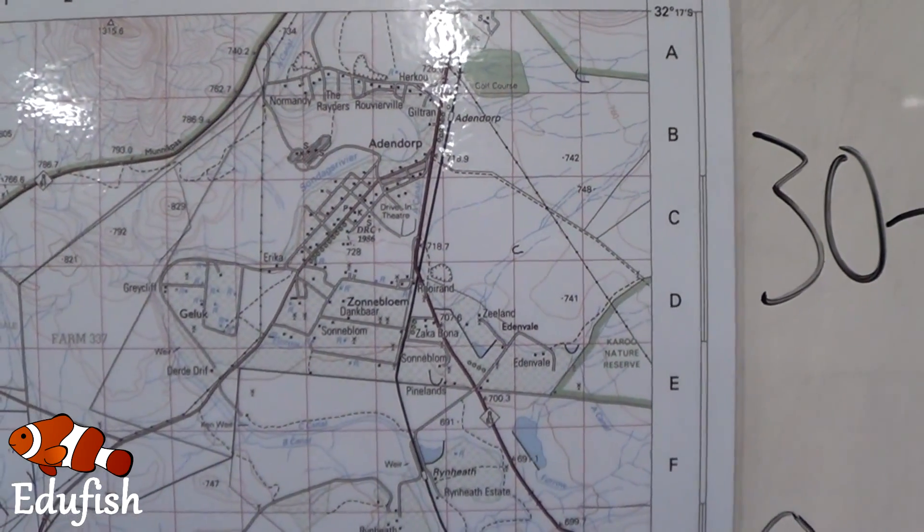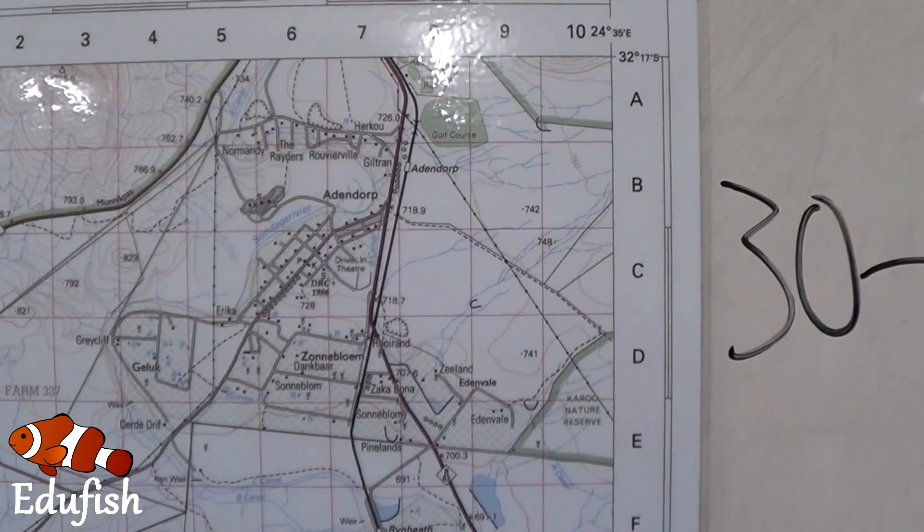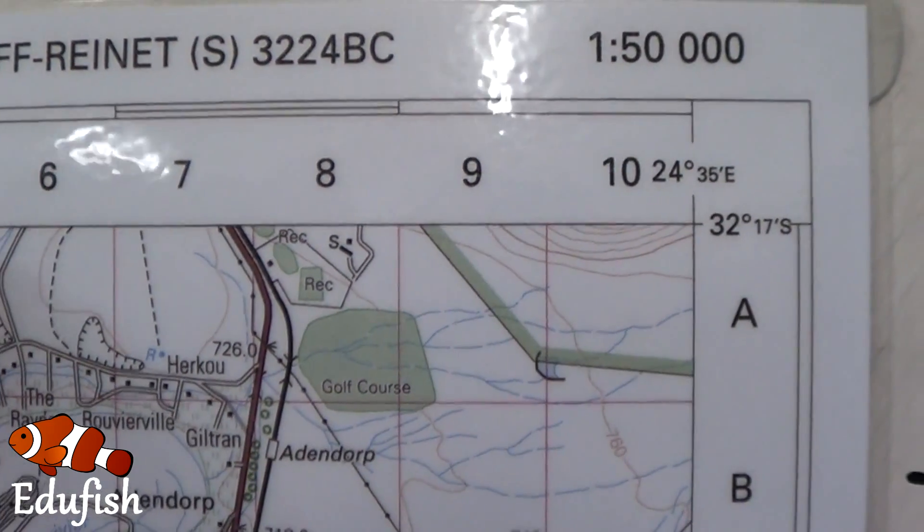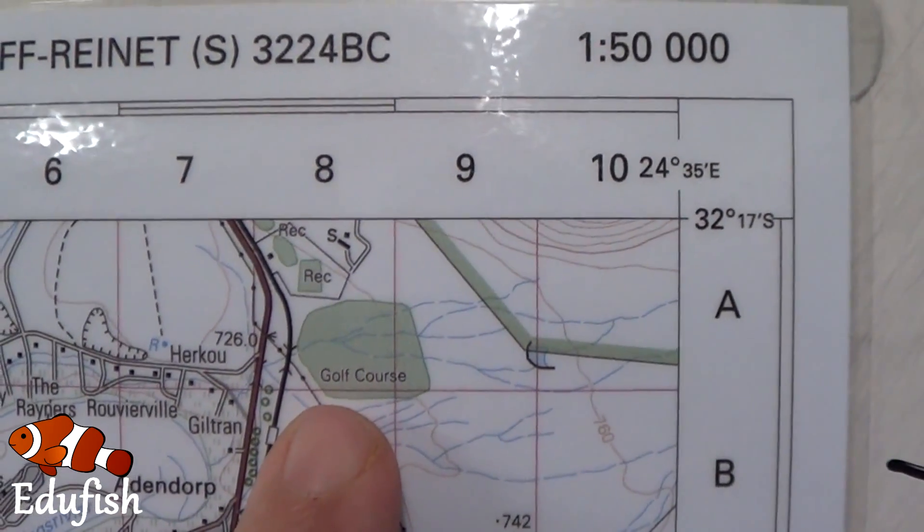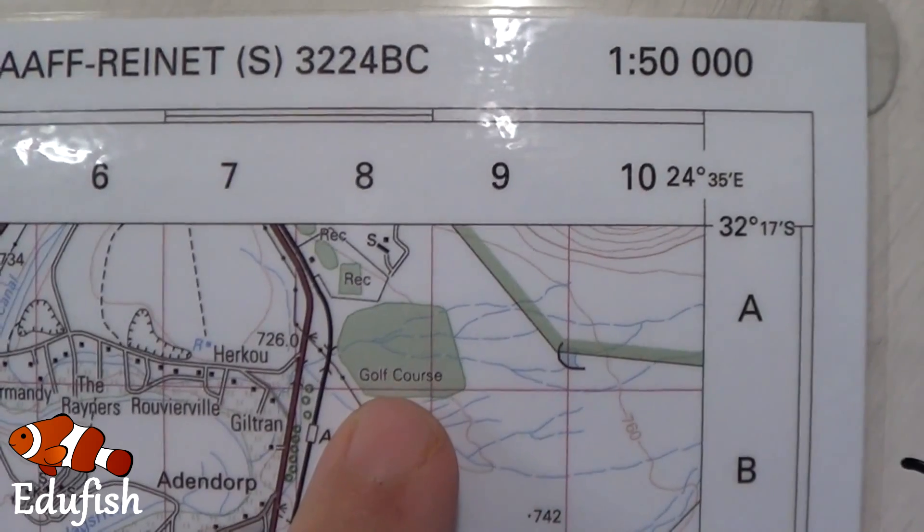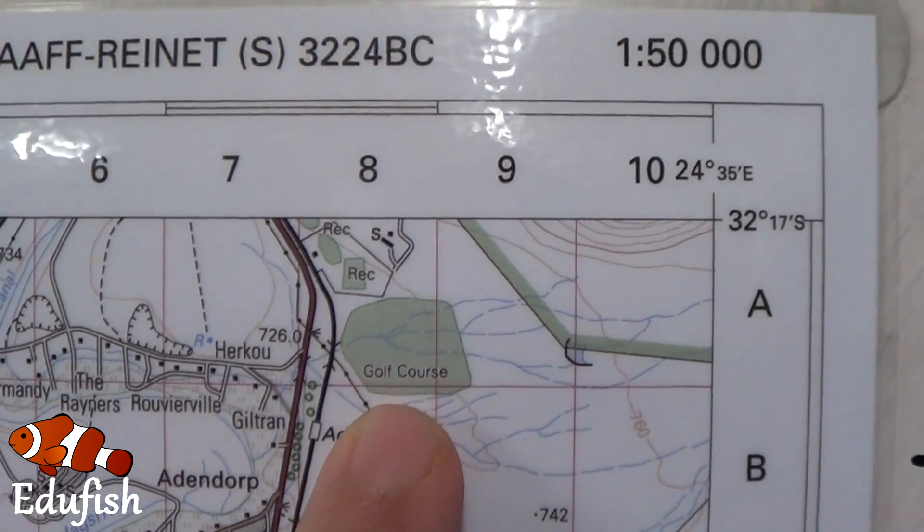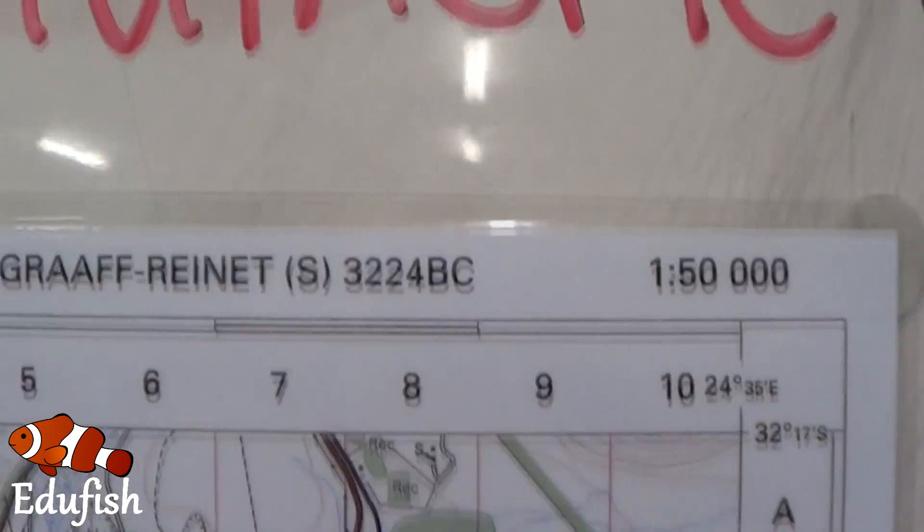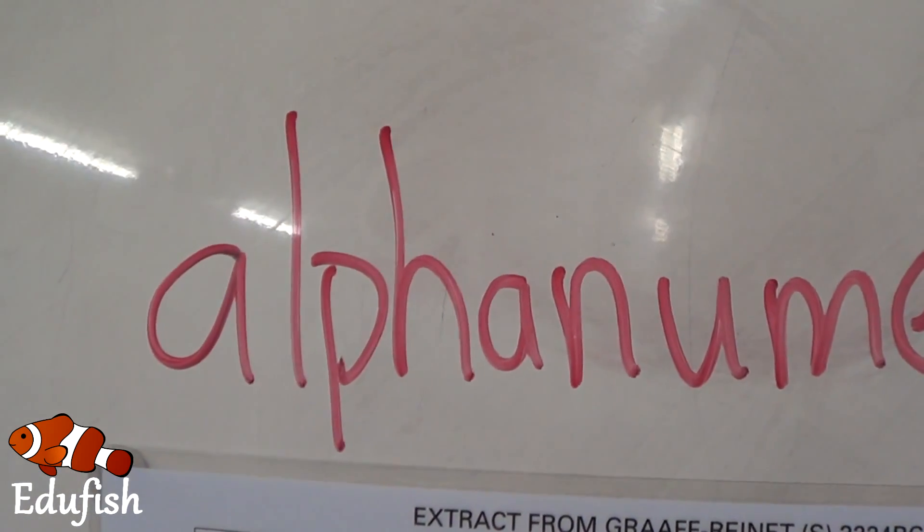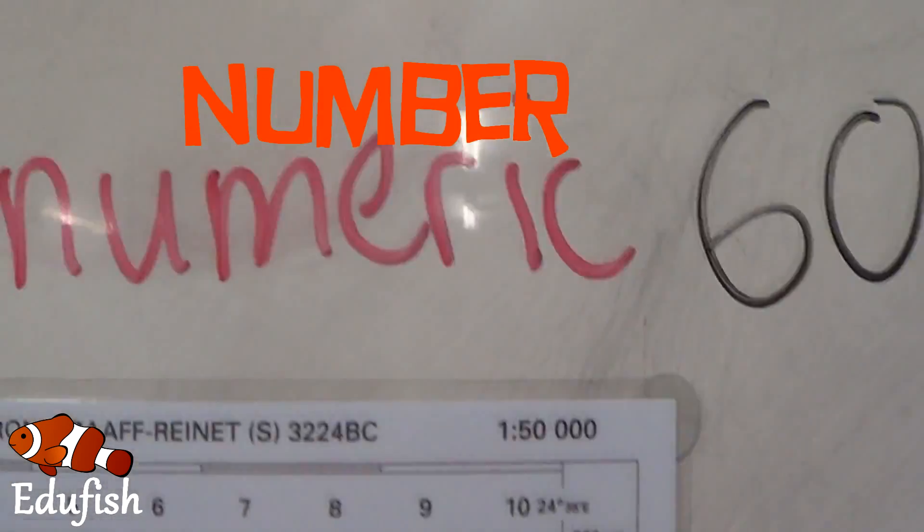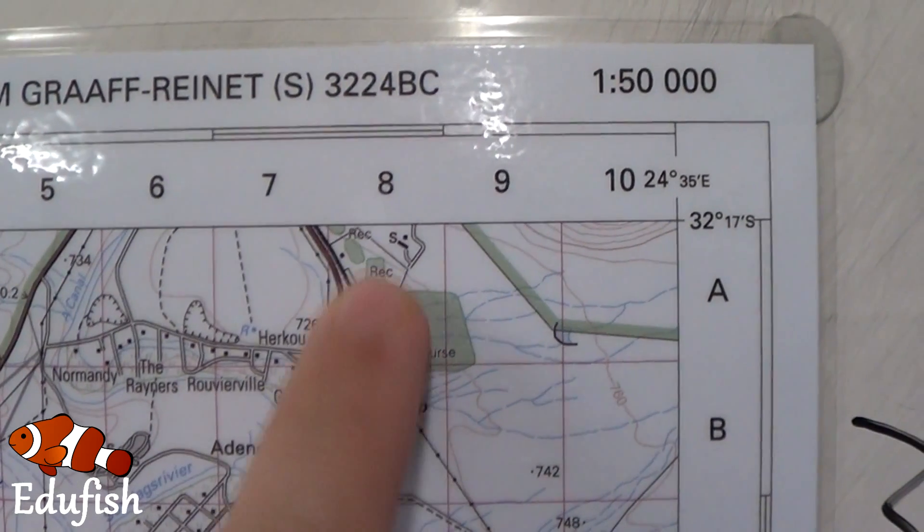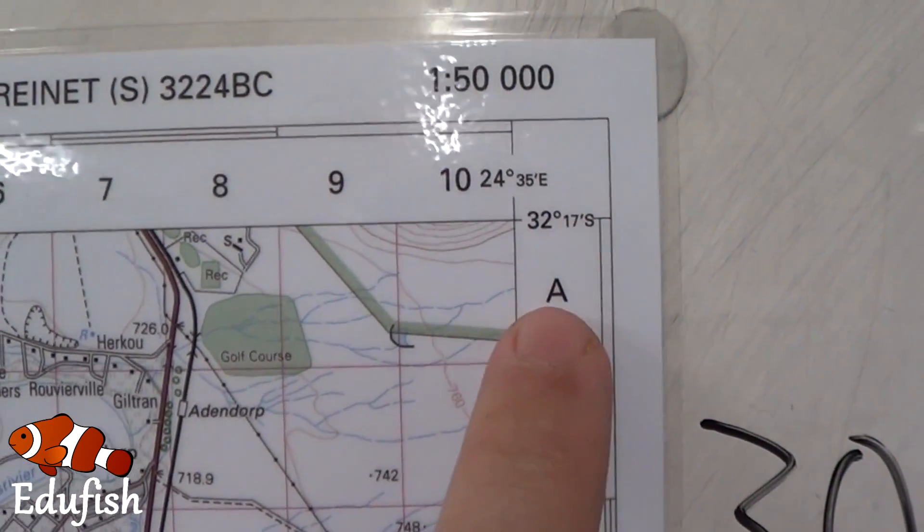Your teacher might ask you to give the alphanumeric reference for the golf course. Let's zoom in on the golf course, and as we can see here, it is found in this block right here. The golf course overlaps with some of the other blocks, but let's use the one where we mostly see the golf course, or where the largest part of the golf course is. Now, before we get to the answer, what does it say? It's an alphanumeric reference. Alpha, meaning the letter comes first, and then the number.